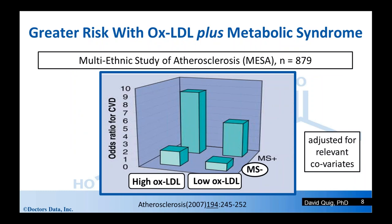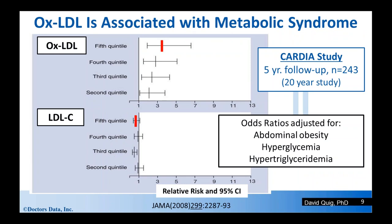There is even greater risk of cardiovascular disease when we combine oxidized LDL with metabolic syndrome. From a study of about 880 adults — the MESA study — the odds ratio for cardiovascular disease is plotted against high and low oxidized LDL in the absence or presence of metabolic syndrome. There is higher risk with high levels of oxidized LDL versus low, but look what happens: there is a synergistic effect when we have either low or high levels of oxidized LDL plus metabolic syndrome. These data were adjusted for relevant covariates.